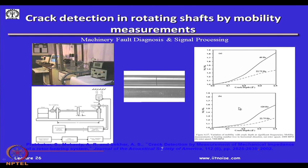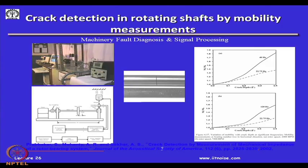We have two ratios: mobility of the cracked system to mobility of the uncracked system. The x-axis is crack depth alpha (a/d), going as high as 0.4. We ran the system at two different frequencies — 22.75 Hz and 40 Hz. With increasing crack depth, mobility changes significantly, showing that by monitoring mobility we can detect that a crack has occurred.